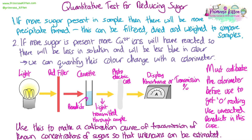Then what you can do is read off the absorbance or transmission value of an unknown sample, and that will give you an estimate of the concentration of glucose in that sample. So we get an actual numerical value for the concentration of glucose this way.